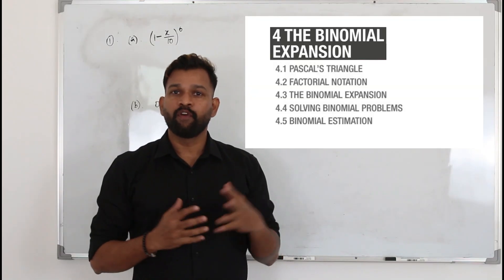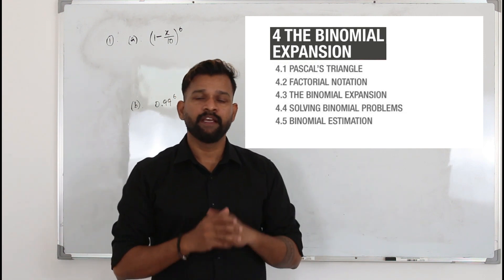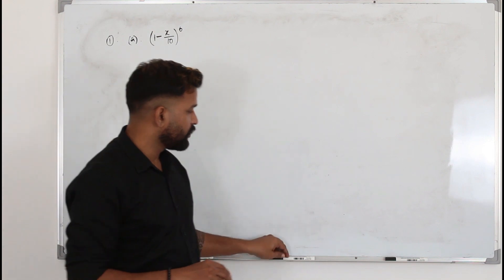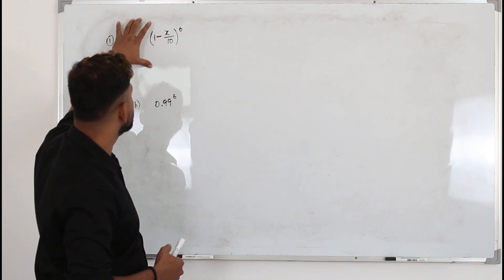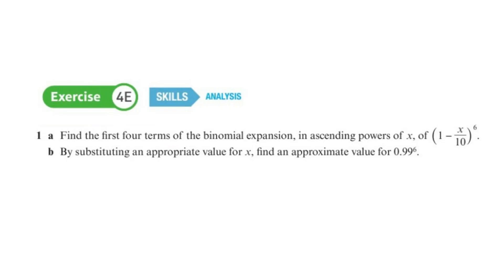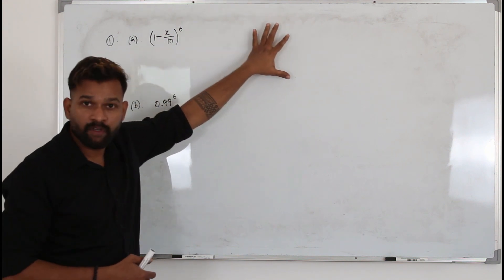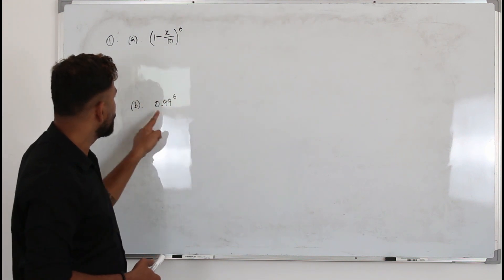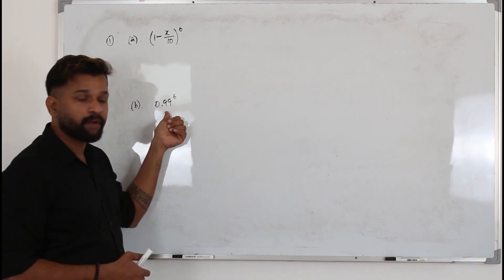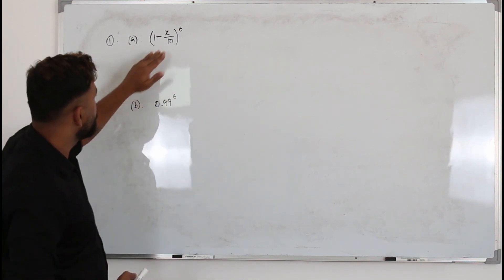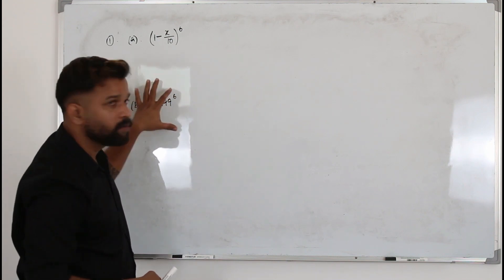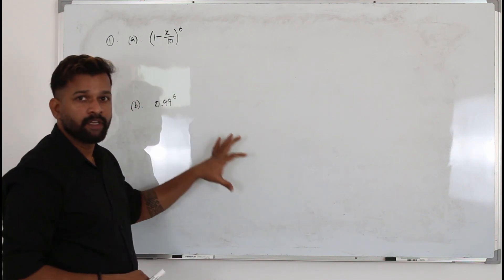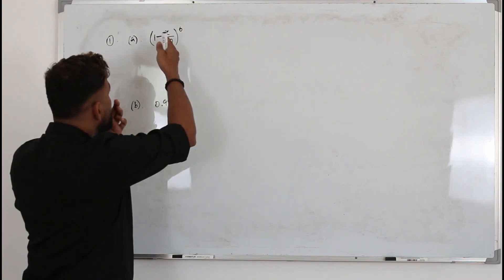The last topic in chapter 4.5 is binomial estimation. There is nothing new to learn here — we just need to use the binomial expansion. I've taken a question from Exercise 4E. Part A asks you to find the first four terms, and Part B asks you to find an estimation or approximation of a given value. I'm going to teach you how to find that approximation using the binomial expansion.